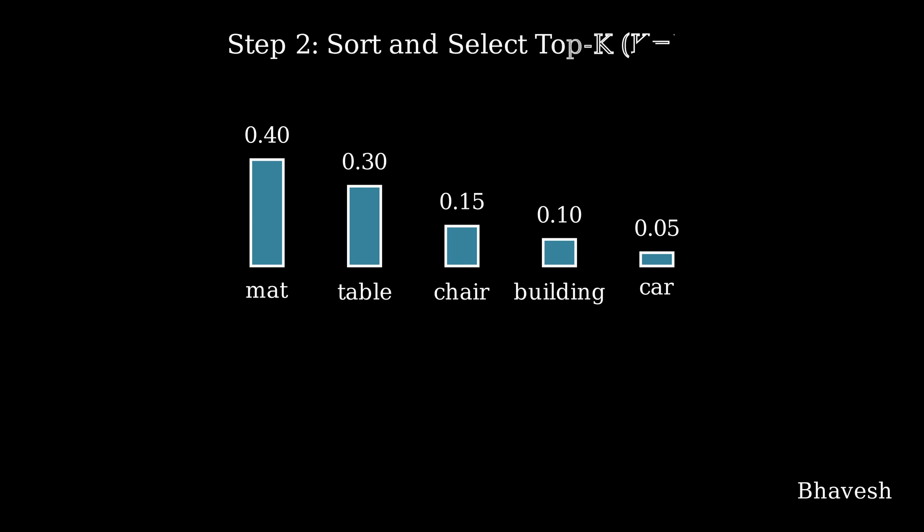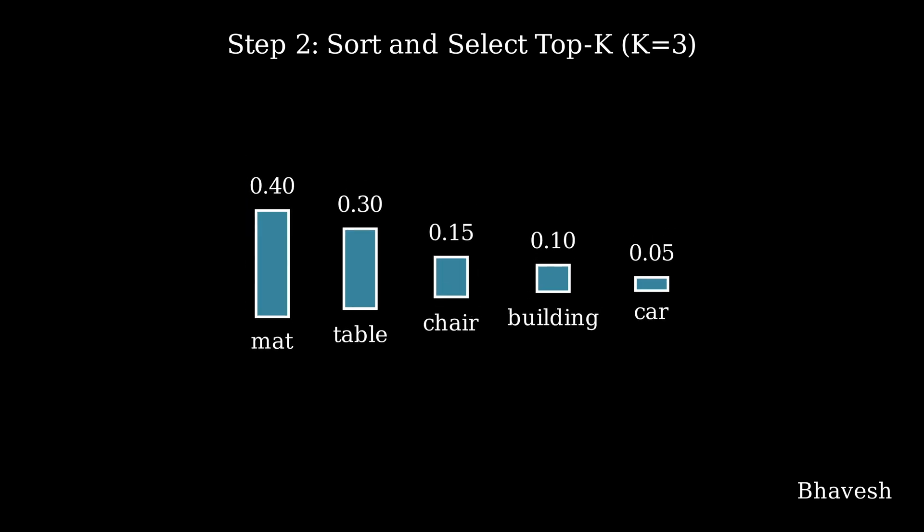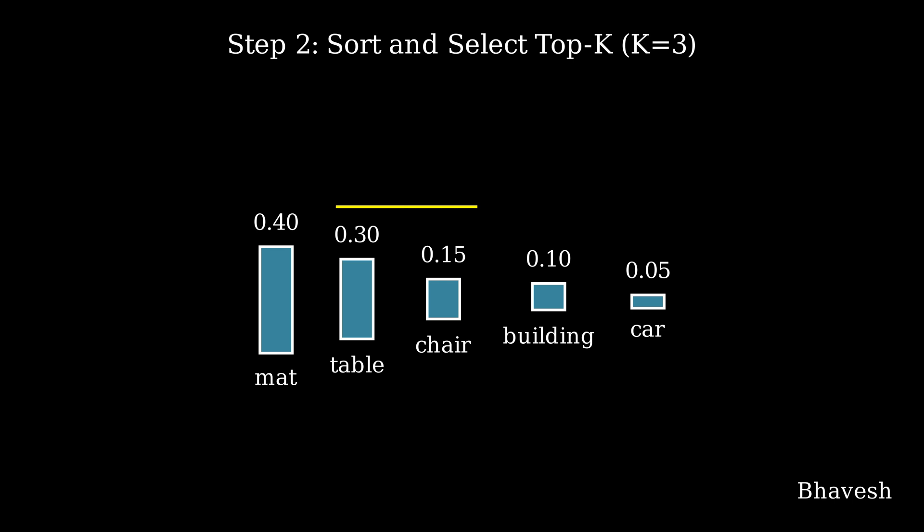In step 2, you have to sort the probabilities in descending order, which in our case was already done. Once you have a sorted list of probabilities and labels, you select the K value. In our case, let's select K equal to 3. It will select the top 3 words: mat, table, and chair.